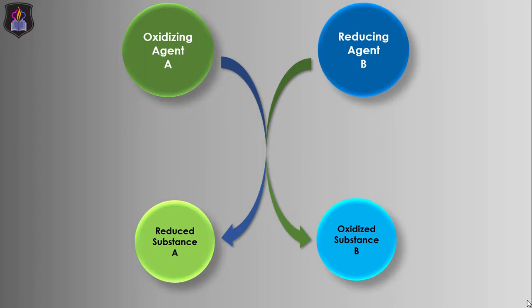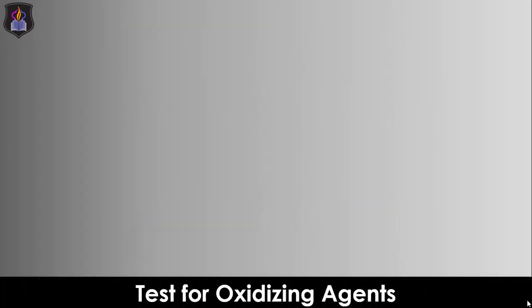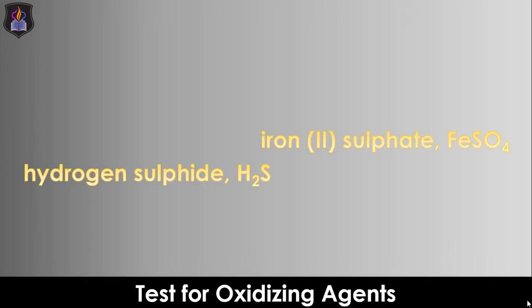Let's start with the test for oxidizing agents. It is obvious that in a Redox Reaction, an oxidizing agent always reacts with a reducing agent. Therefore, to test for an oxidizing agent, a known reducing agent will be used. In this tutorial, we would be using hydrogen sulfide gas and an iron-2 salt solution as a reducing agent.